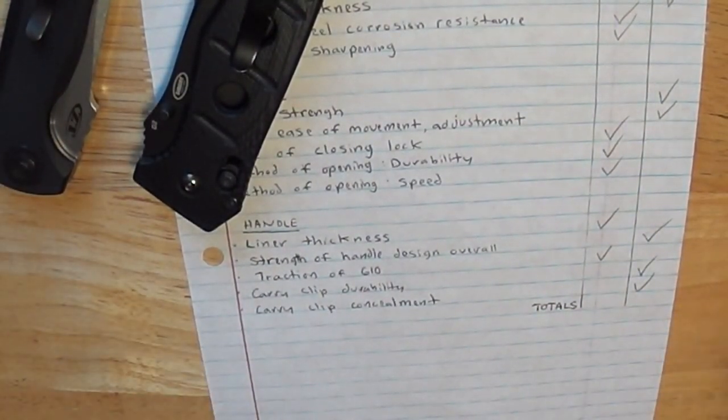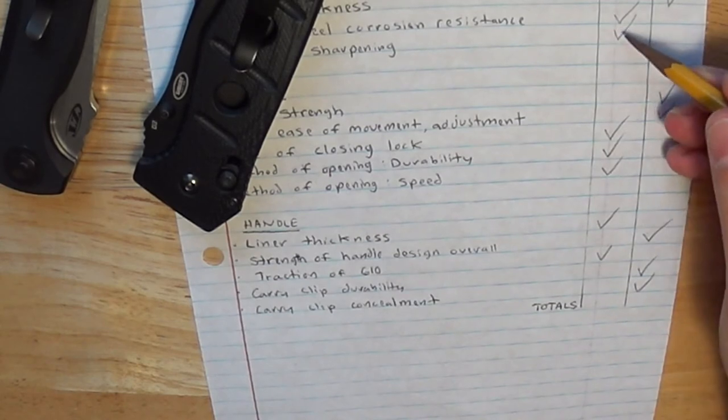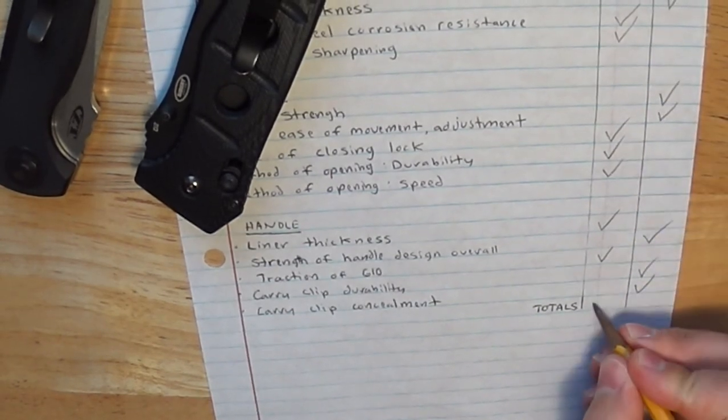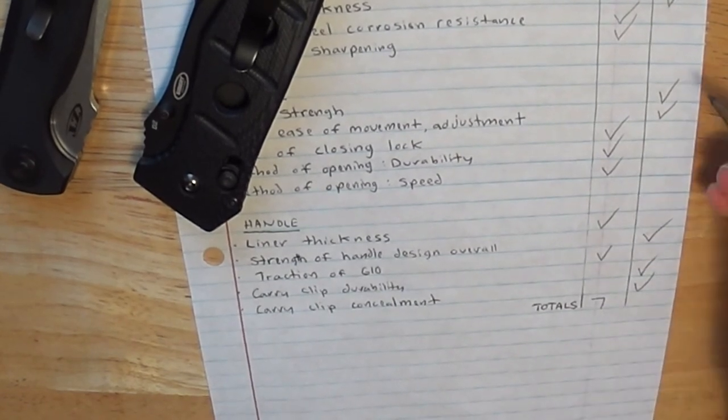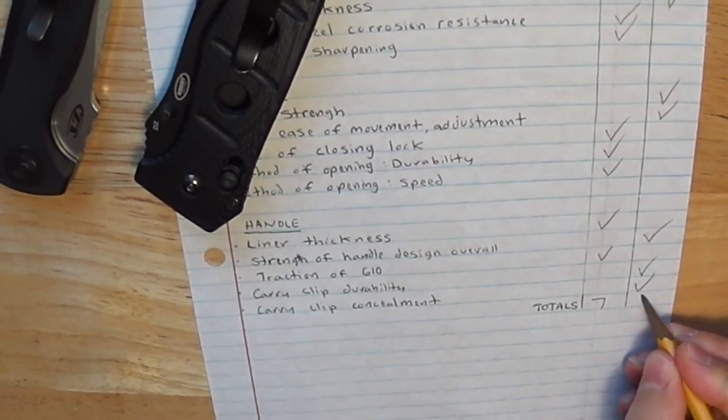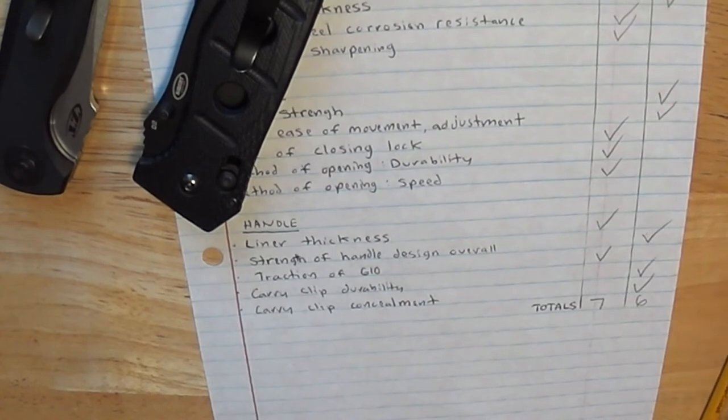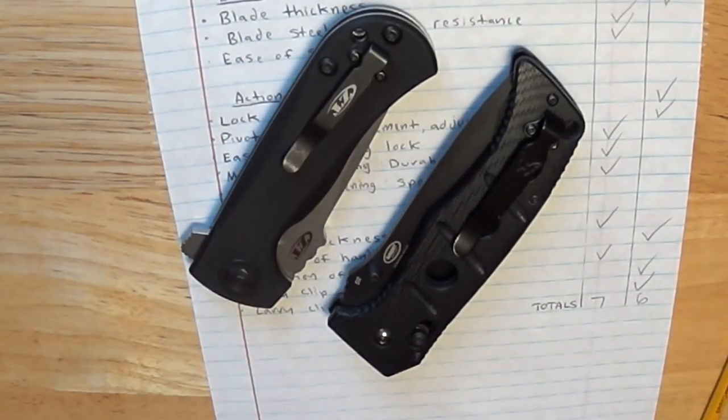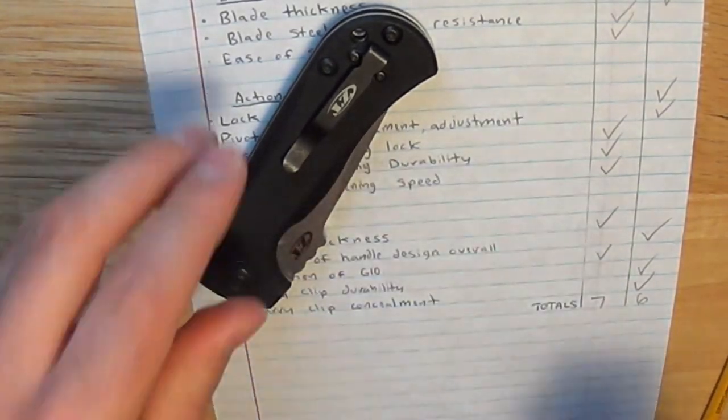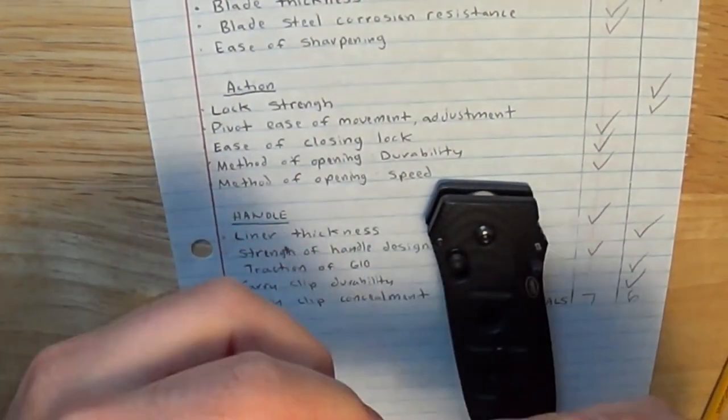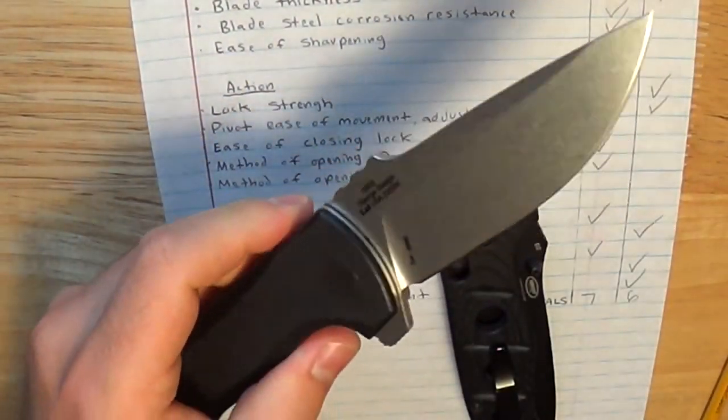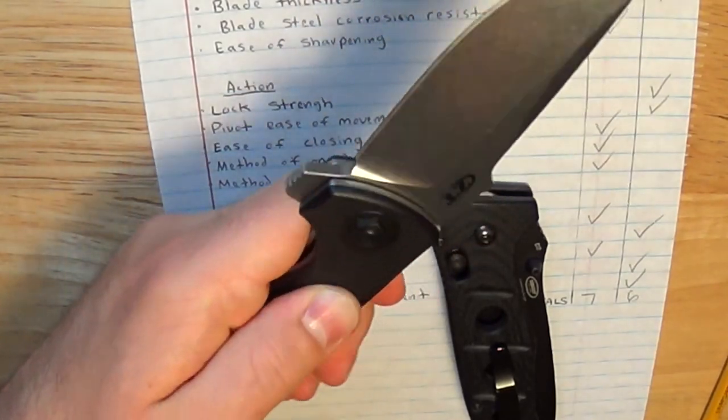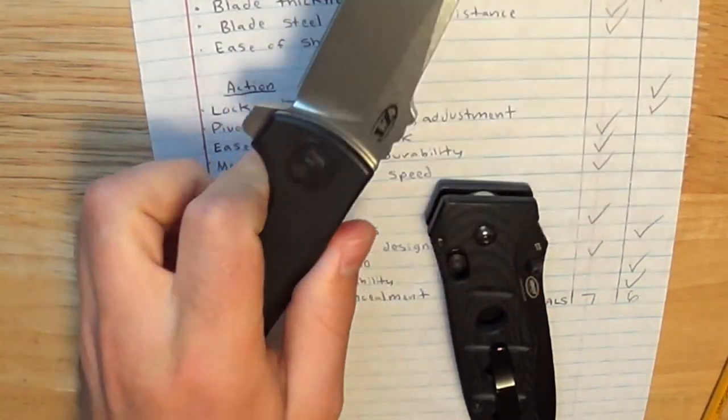In terms of totals to see who won this fight, I have seven for ZT, and I have six for Benchmade. It's a very close round. They're both awesome knives. I'd say the ZT has some design edges on the Benchmade in terms of being quicker to open because it's a flipper and just having a more tractable G10 handle.